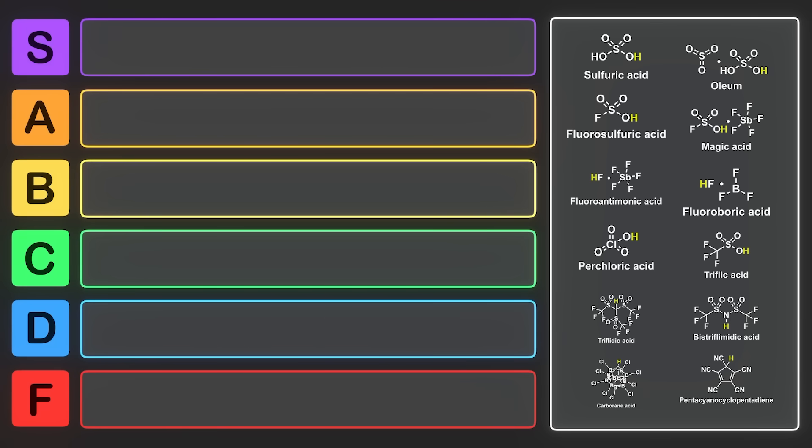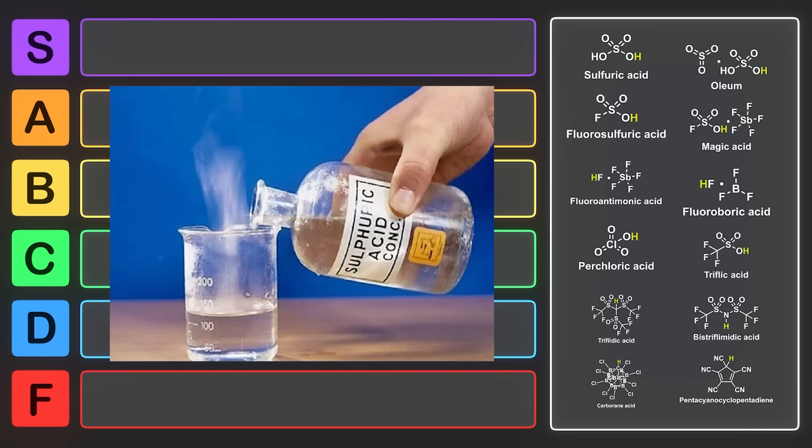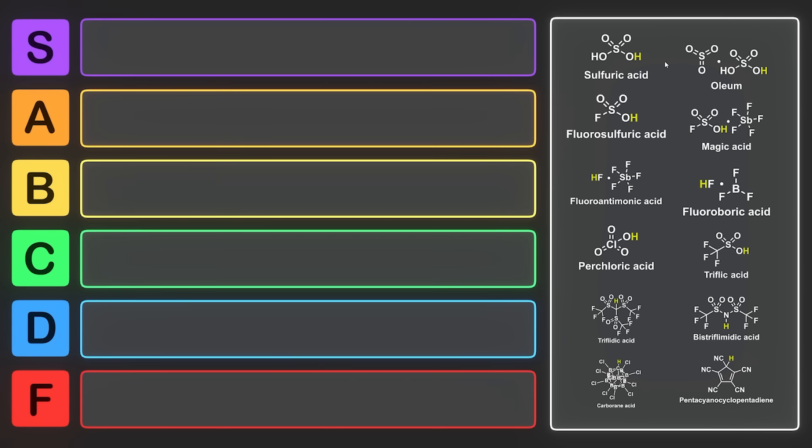Traditionally, a superacid is defined as anything that's stronger than sulfuric acid. Although this is a matter of semantics, whether or not it's a superacid depends on your defining criteria. Sulfuric acid is pretty strong and can catalyze many different reactions. The pKa of acids is typically solvent-dependent, but I'm just going to give an example for each one here.